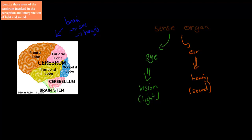The cerebrum is the biggest part — the vast majority of the brain. It's put into four different categories: the frontal lobe, the parietal lobe, the occipital lobe, and the temporal lobe. These are the parts of the cerebrum.